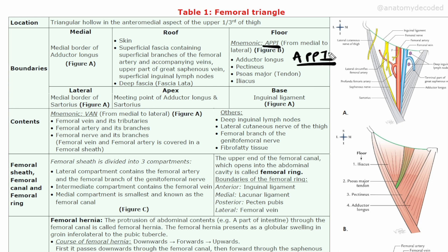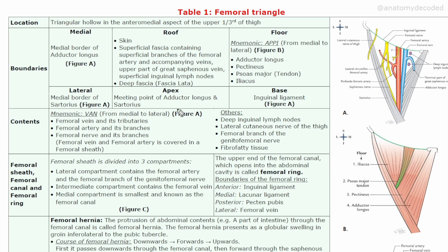The floor of the femoral triangle is remembered by the mnemonic VAPPI, from medial to lateral. V stands for the femoral vein — wait, that's contents; for the floor: A stands for adductor longus, then P for pectineus, then P for the tendon of psoas major, and I for iliacus. These four structures from medial to lateral form the floor.